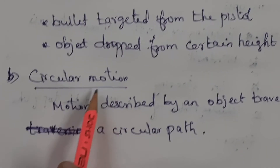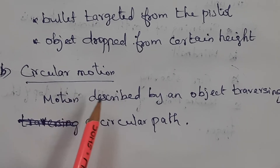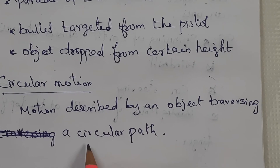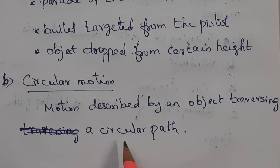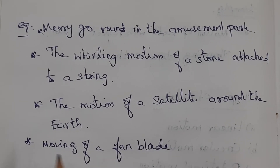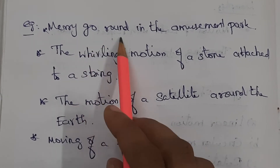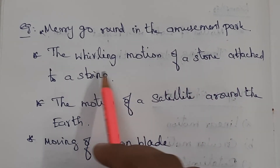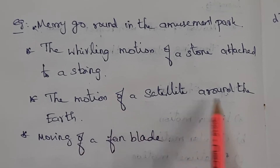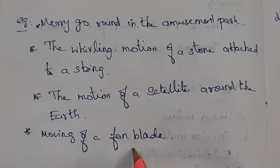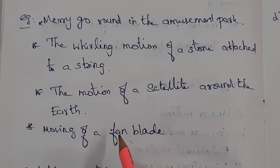Next, circular motion. The motion described by an object traversing a circular path. Examples: a merry-go-round in an amusement park, whirling motion of a stone attached to a string, the motion of a satellite around the earth, and the moving of a fan blade.